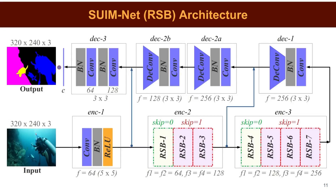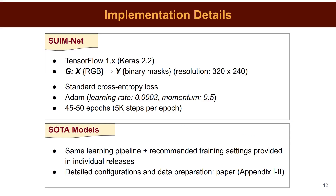Each decoder block consists of a convolutional layer that receives skip connections from its mirrored encoding layer, followed by batch normalization and a deconvolutional layer for spatial upsampling. The final convolutional layer generates the binary pixel labels for each object category. We combine the benefits of skip connections and residual learning into a fully convolutional shallow network architecture for fast inference. We use TensorFlow and Keras libraries to implement the training pipeline of SWIMnet, supervised by the ADAM optimizer with binary cross-entropy loss.